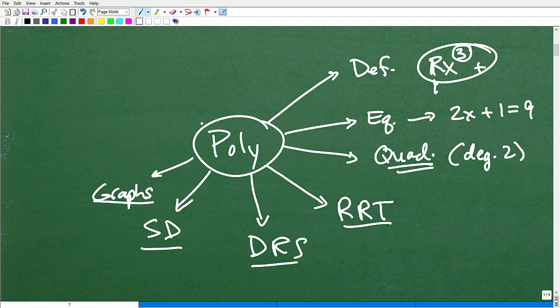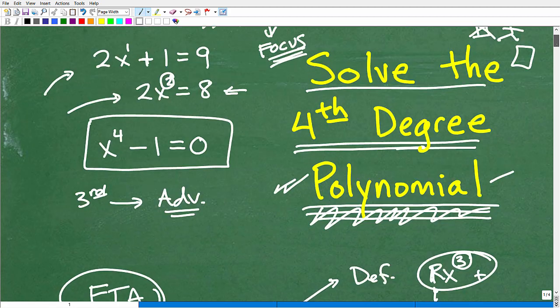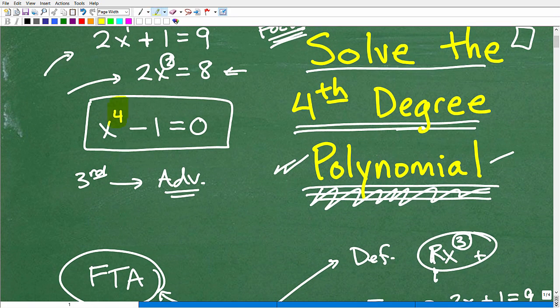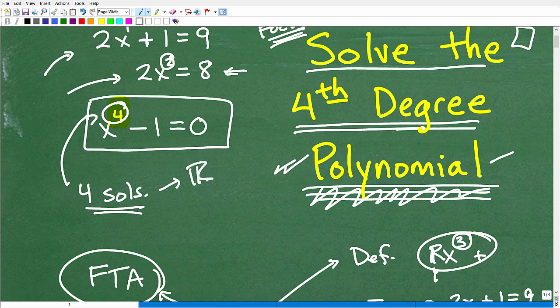But the main thing that we really need to understand is this thing right here, the fundamental theorem of algebra. And the fundamental theorem of algebra basically states this. The degree of your polynomial, in this case, it's four. We're dealing with a fourth-degree polynomial. That's how many solutions this thing is going to have. So this polynomial will have four solutions.